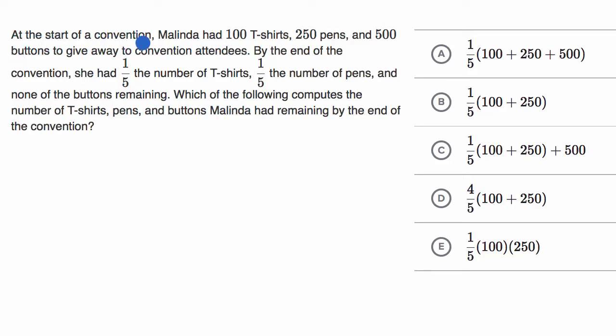We are told that at the start of a convention, Melinda had 100 T-shirts. I'll underline the important numbers here, 250 pens and 500 buttons to give away to convention attendees.